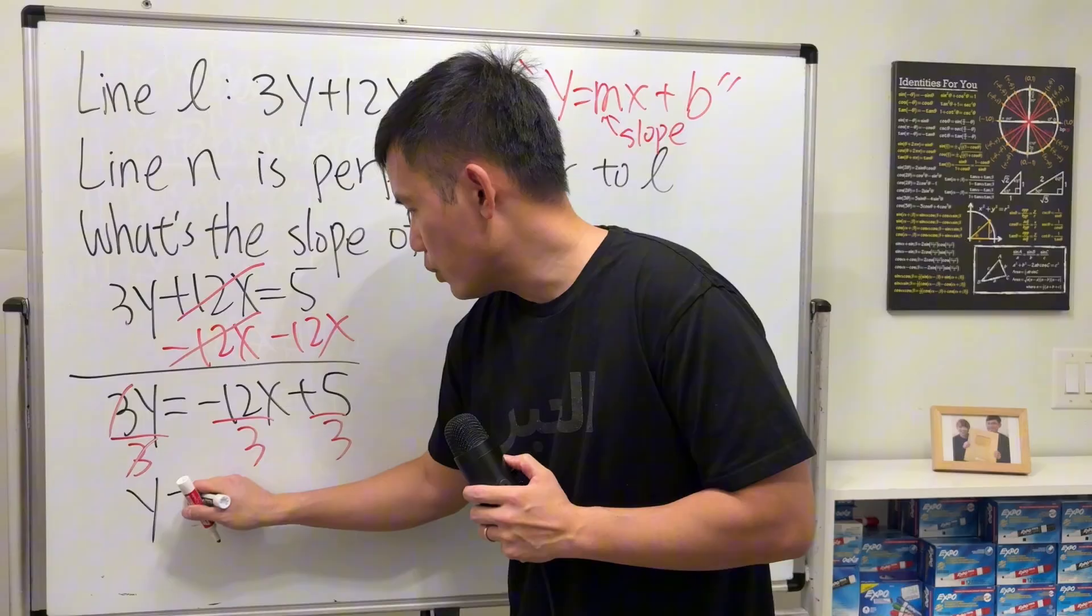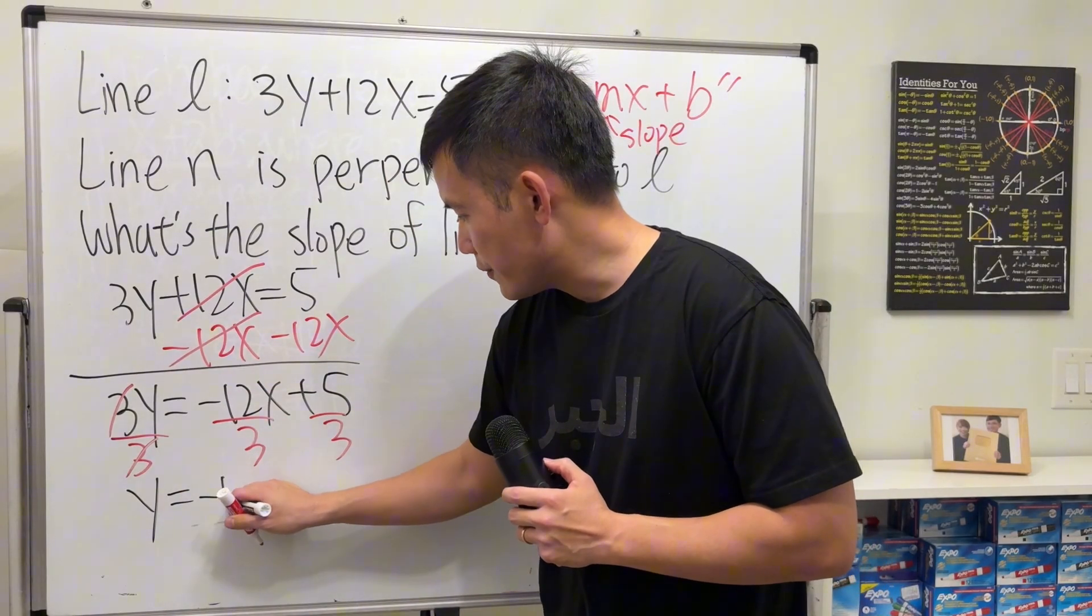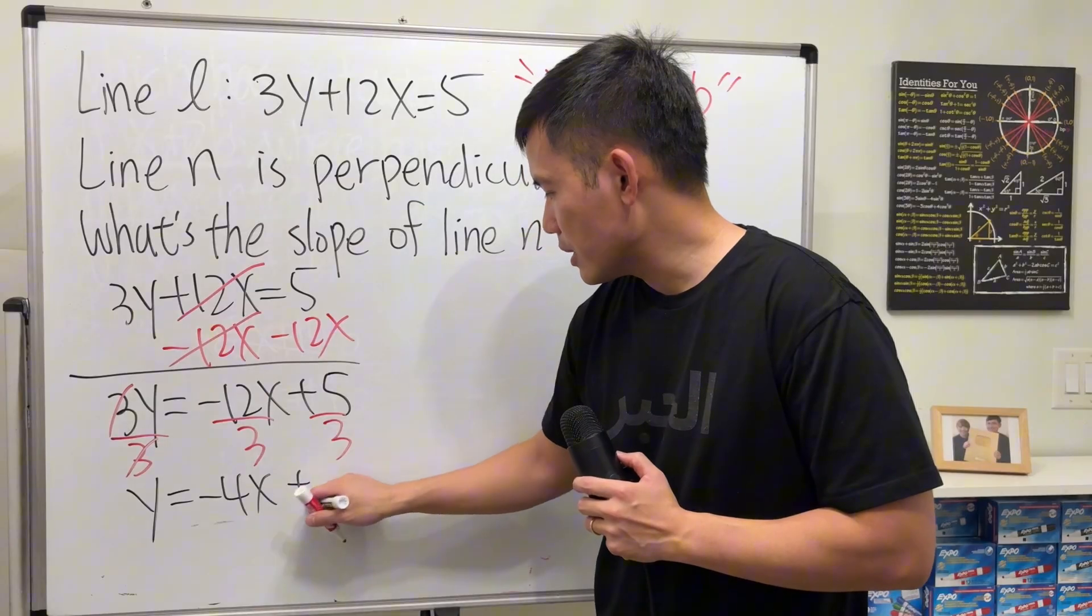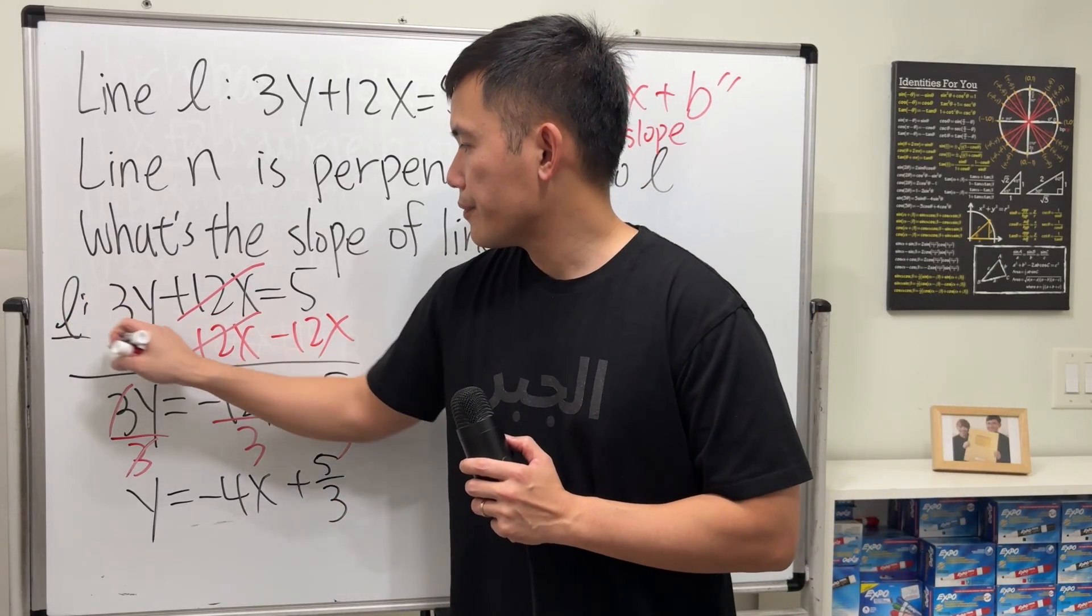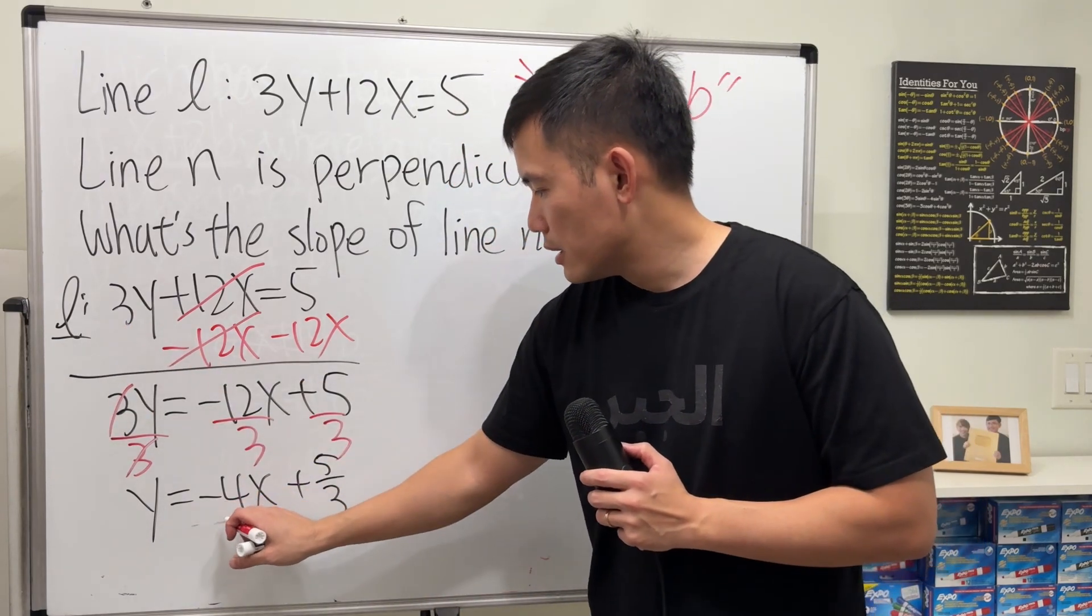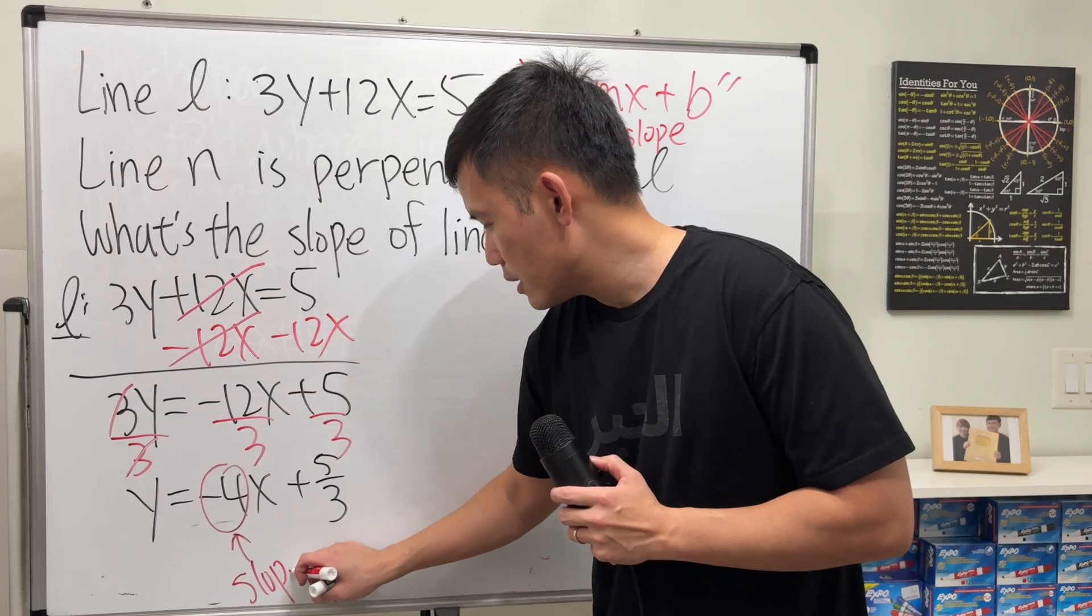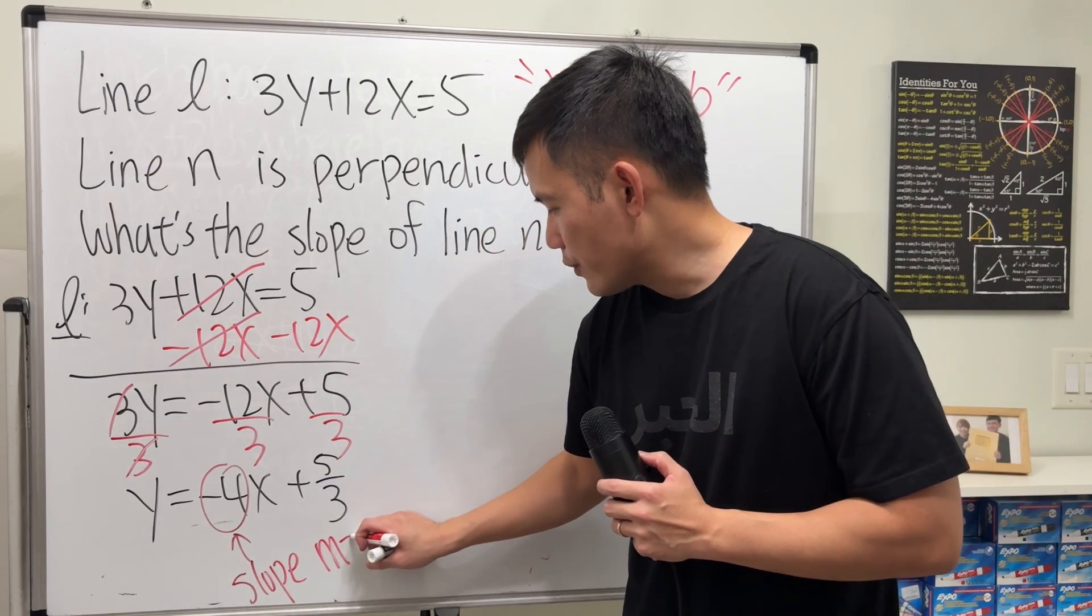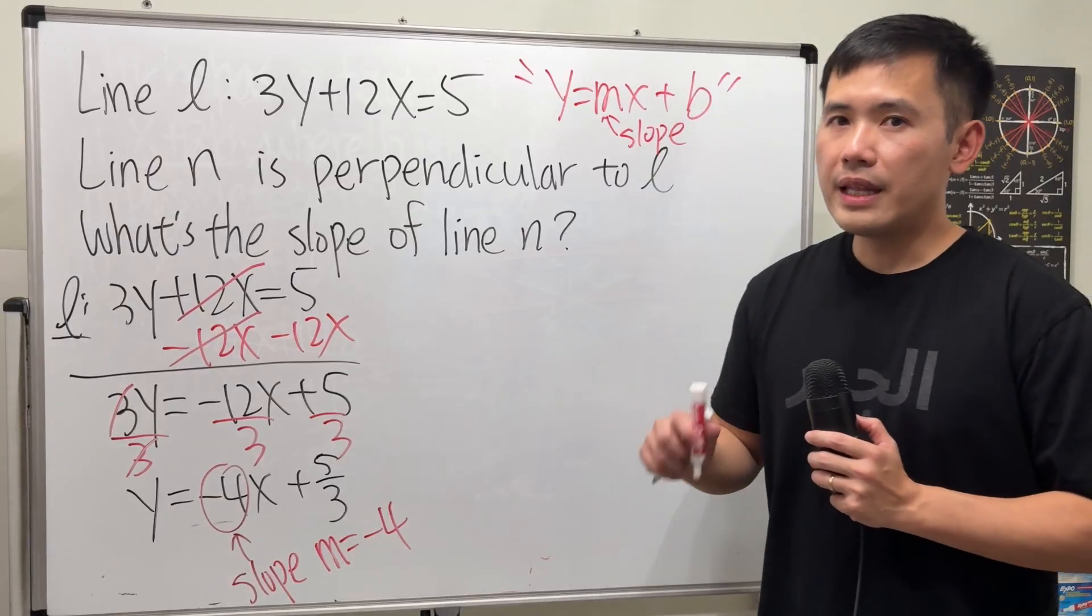So, y equals negative 12 over 3 is negative 4. And we have the x, and then plus 5 over 3. Now, this right here is for line L. And you can see that this right here will be the slope. And the notation for that is m, and I'll just say negative 4. So, now, here is the fact.